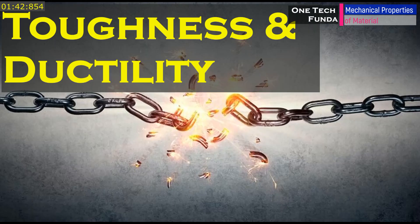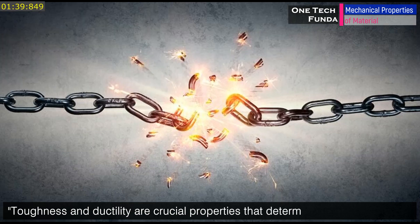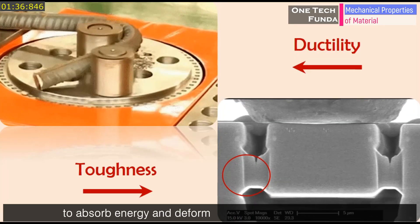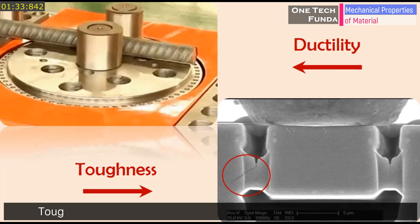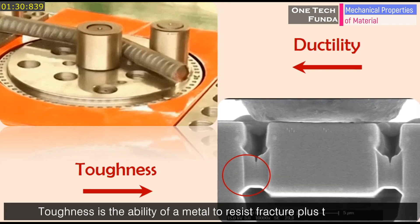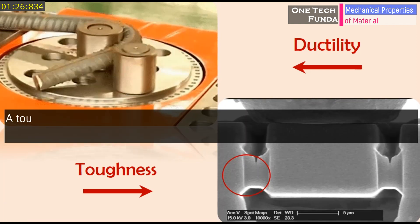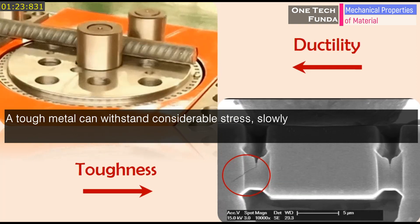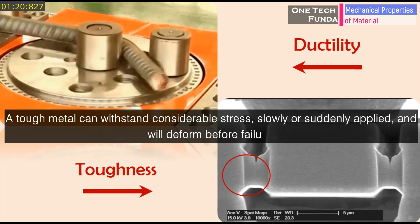Toughness and ductility are crucial properties that determine a material's ability to absorb energy and deform plastically before fracturing. Toughness is the ability of a metal to resist fracture, plus the ability to resist failure after the damage has begun. A tough metal can withstand considerable stress, slowly or suddenly applied, and will deform before failure.